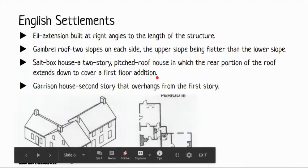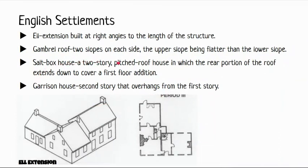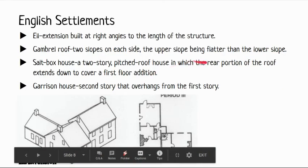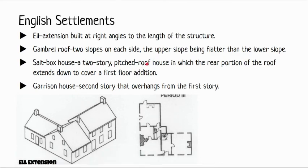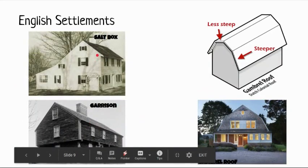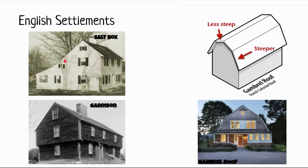The salt box is a two-story pitched roof style in which the rear portion of the roof extends down to cover a first-floor addition. The original house was built first, and then a rear addition was run along the full length rather than jutting out like an L. The original pitched roof was then extended down on one side. A helpful way to remember it: the salt box has a 'mullet roof' — short in front and longer in the back.